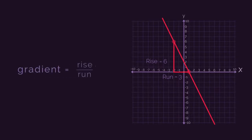So, gradient equals rise over run, so 6 divided by 3, which we simplify, the gradient is negative 2.